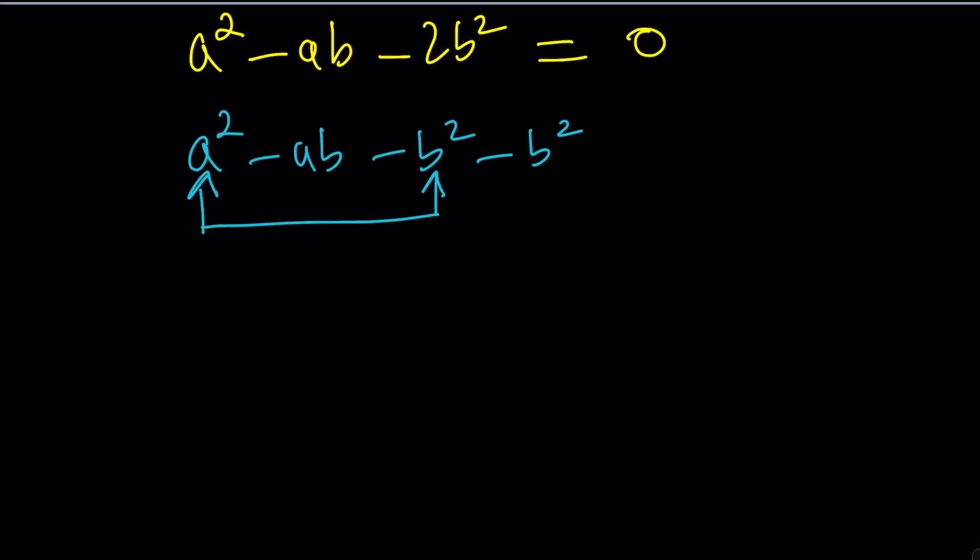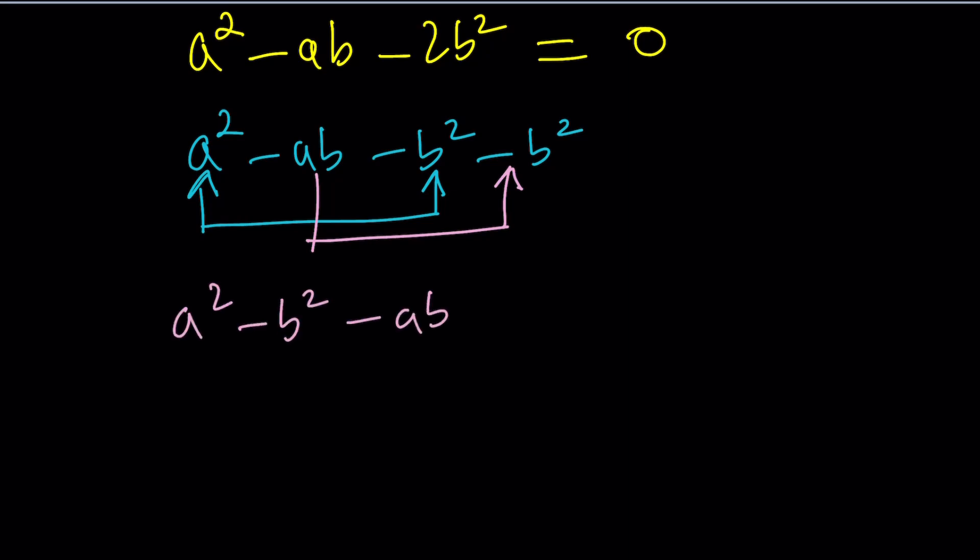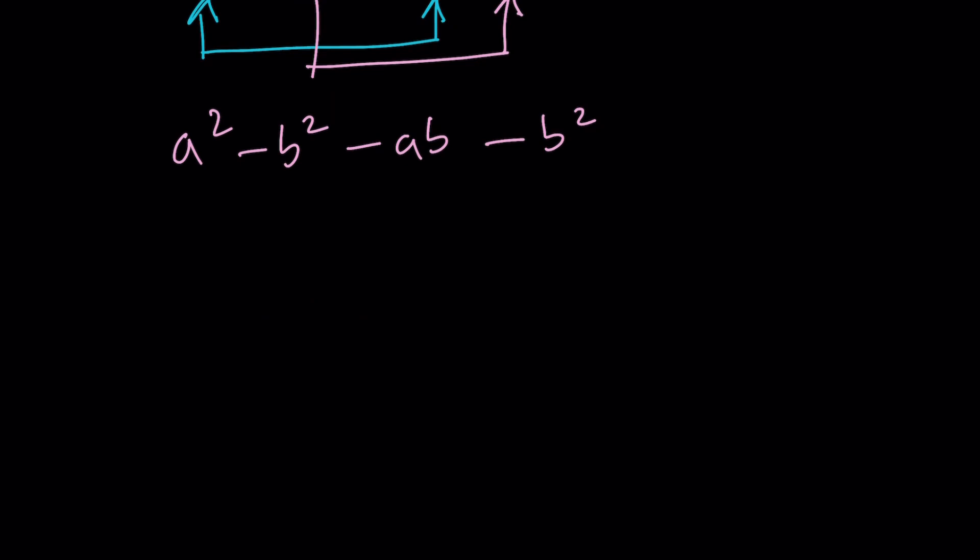The other two are going to be these two: a squared minus b squared minus ab minus b squared. Now we set it equal to 0. These two can be factored into a plus b, a minus b from difference of two squares. If I take out a minus b here, I get a plus b. So a plus b is a common factor.